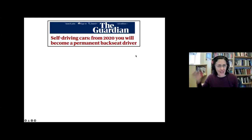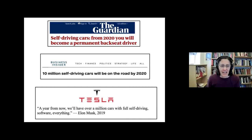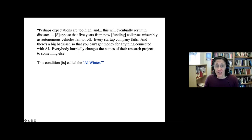So many of you have been reading about the promise of self-driving cars for years. This appeared in 2015 in The Guardian, promising that in 2020 we'd all have self-driving cars and never have to drive again. The following year, Business Insider promised that 10 million self-driving cars would be on the road by 2020. In 2019, Elon Musk, the CEO of Tesla, promised that a year from now, that is 2020, we'll have over a million cars with full self-driving software, everything. So now it's 2022, and none of these things have happened yet.